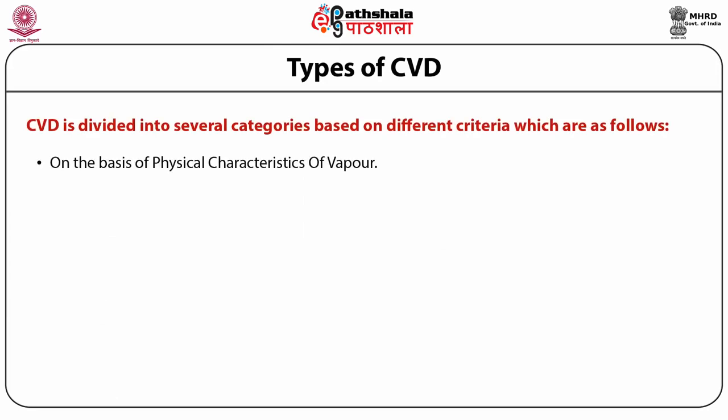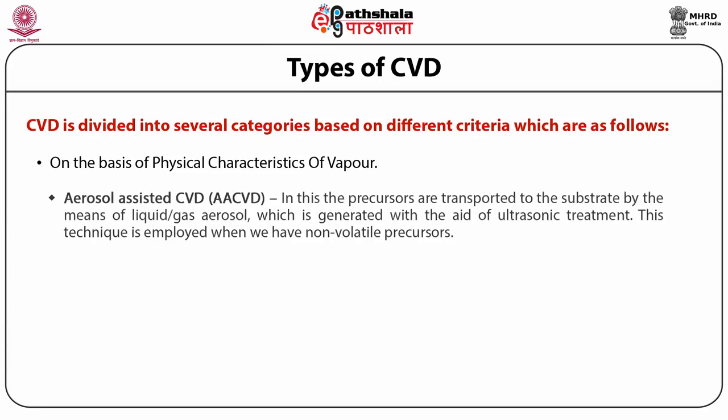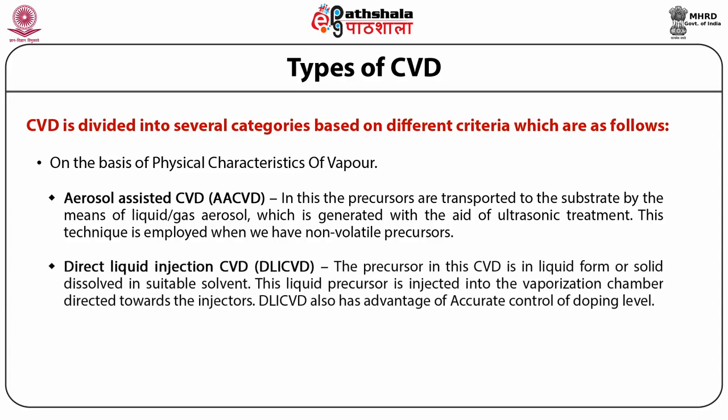On the basis of physical characteristics of vapor, aerosol assisted CVD (AACVD) transports precursors to the substrate by means of a liquid-gas aerosol generated with ultrasonic treatment. This technique is employed when we have non-volatile precursors. In direct liquid injection CVD (DLI-CVD), the precursor is in liquid form or solid dissolved in a suitable solvent. This liquid precursor is injected into the vaporization chamber directed towards the injectors. DLI-CVD has an advantage of accurate control of doping level.